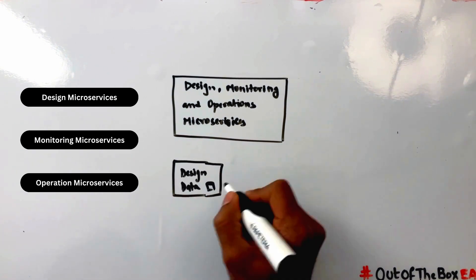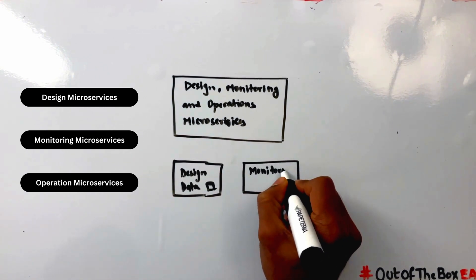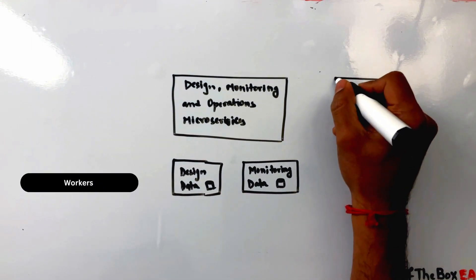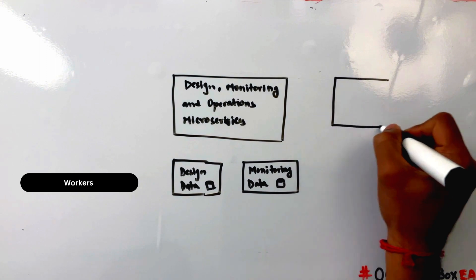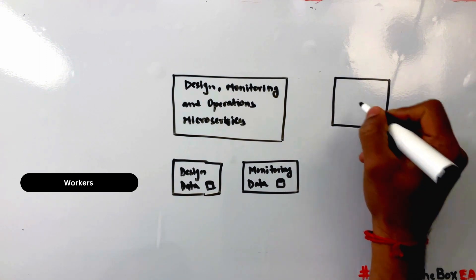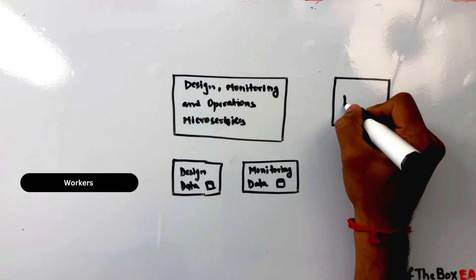Both the design and monitoring data is persisted locally in CPI. In SAP CPI, workers refers to the runtime instances that execute the integration flows. They are responsible for processing the messages and the data that flow through the integration flows.